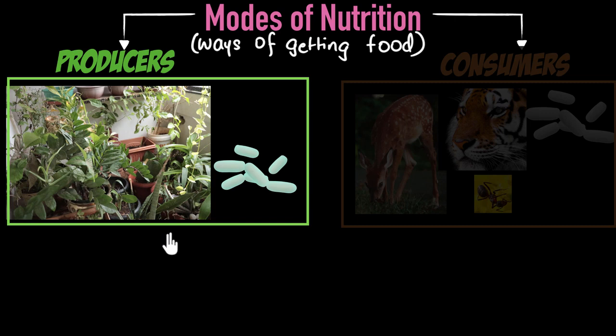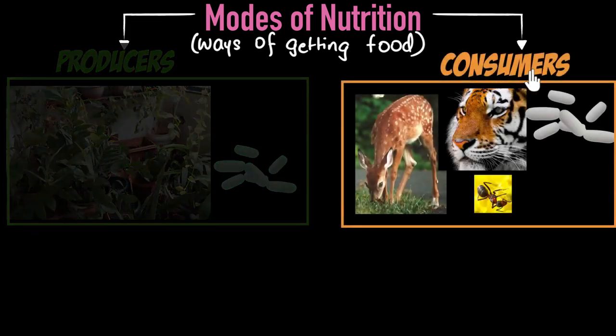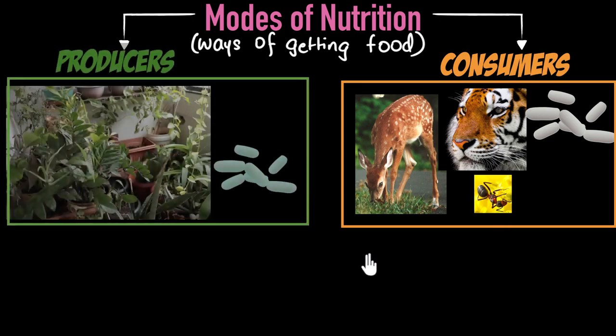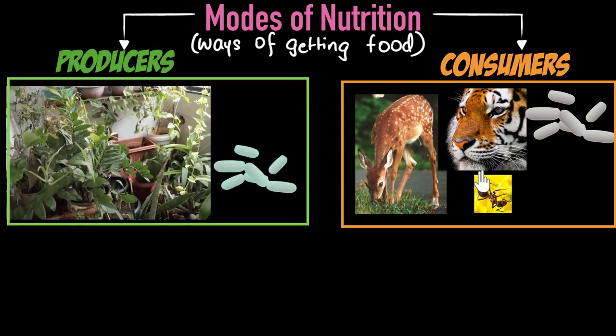You and I are not producers because we can't make our own food like that. So what are we? Well, if you're not a producer, you are a consumer. Consumers, as the name suggests, are the ones that consume others, that eat others for food. You and I are consumers, my friend. And most animals and insects that you are familiar with, and even most bacteria, they're all consumers. Either we eat vegetables and fruits, or we eat other animals like chicken or fish, or maybe eggs. Producers make their own food, consumers eat others.